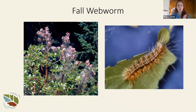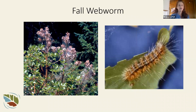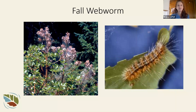Fall webworm is a late-season defoliator, appearing around August into September. It affects cottonwood, willow, alder, and ash — species typically found along riparian areas and waterways. It creates webs or tents on branches and is mostly a cosmetic issue — it's not harming the tree. With fall webworm, unlike tent caterpillar, evidence suggests you can prune off the branches and the tree will be fine, although it's also fine to just leave the tents where they are.